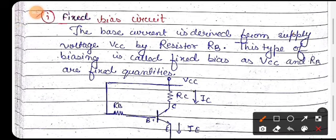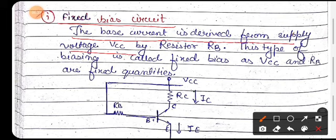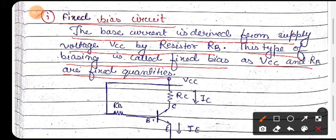Let's start with the first one: fixed bias circuit. The base current is delivered from supply voltage VCC by resistor RB. This type of biasing is called fixed biasing because VCC and RB are fixed quantities.